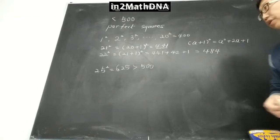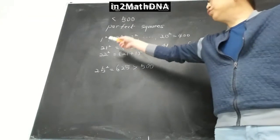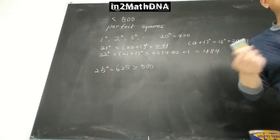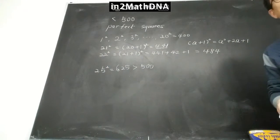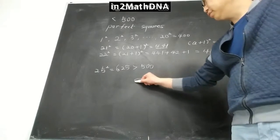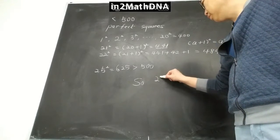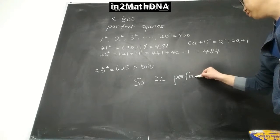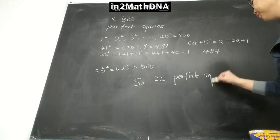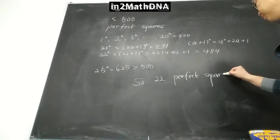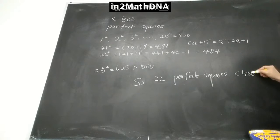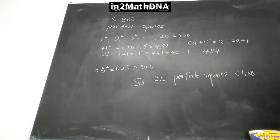You don't need to check 23 squared — just 1 squared through 22 squared. So there are a total of 22 perfect squares less than 500.